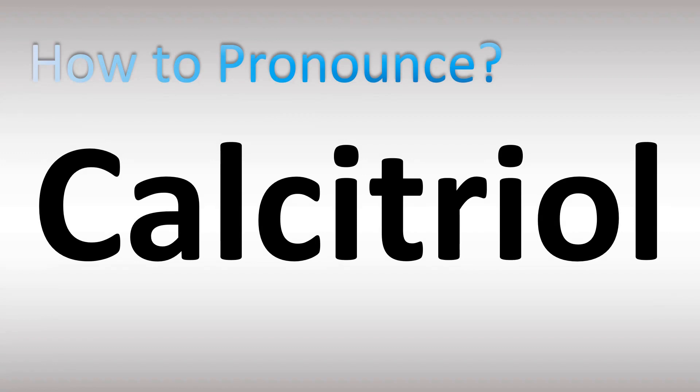How do you pronounce the name of this molecule in English? The pronunciation of this word is calcitriol — cal-ci-tri-ol — four syllables. Stress on the second syllable, the 'ci' syllable: calcitriol.